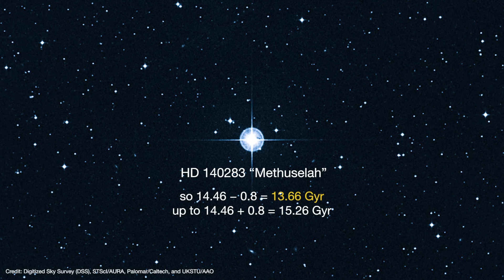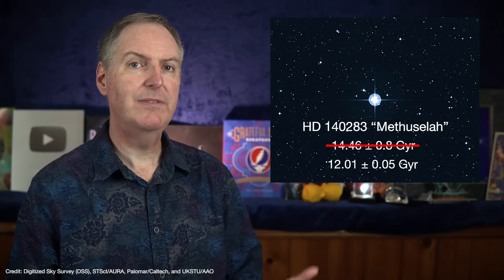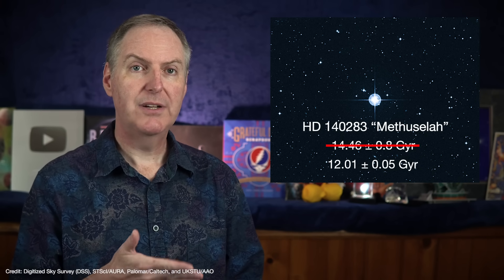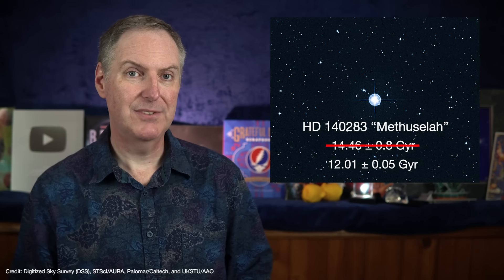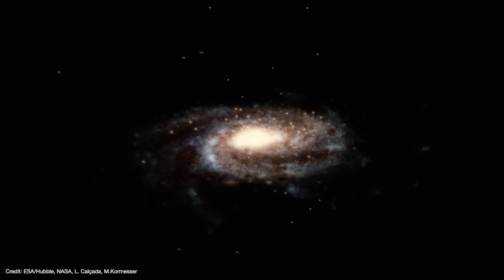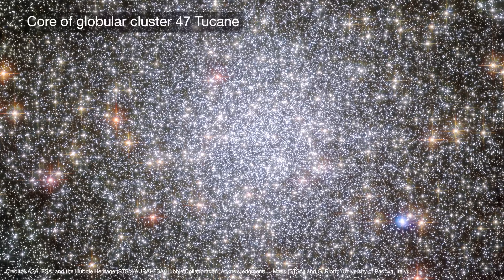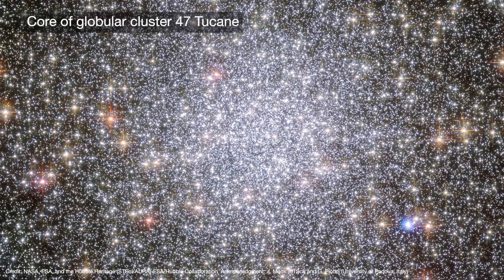But since then, our understanding of stellar evolution has improved, and that ended up revising Methuselah's age downward to 12 plus or minus 0.05 billion years. If the universe was 26 billion years old, there would be clusters of very old K and M-type stars still hanging around our galaxy, but so far no infrared surveys have found any.